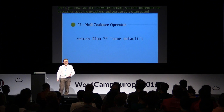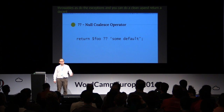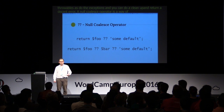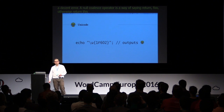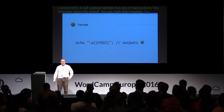The null coalesce operator is just a way of saying: if foo is set and has a value, return foo; otherwise return this default. You can also chain them together. You can also output Unicode, which is obviously really useful.